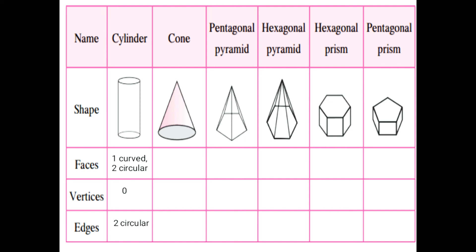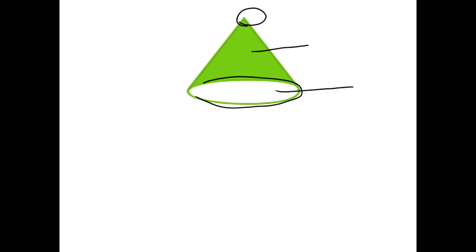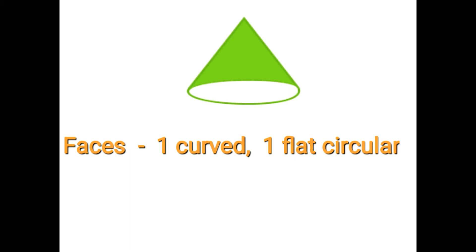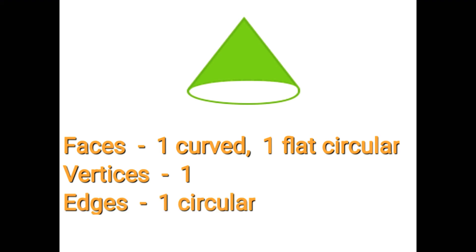The answer for cylinder you have to write on the first column. Next is cone: 1 curved face, 1 vertex, 1 circular face and 1 circular edge. Write the answer — Faces: 1 curved, 1 flat circular. Vertices: 1. Edges: 1 circular.